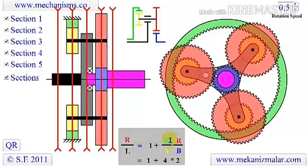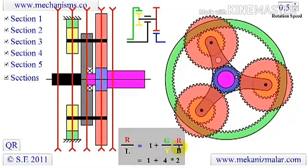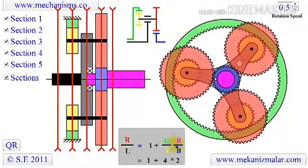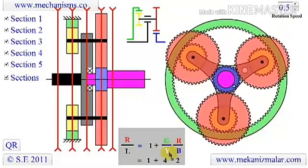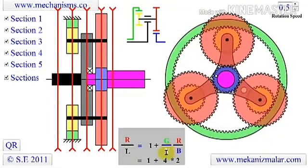The gear ratio of the output at right to the input at left is given by the formula shown. The color and the character R, G, B, and Y shows the number of teeth on the red, green, blue, and yellow gears.